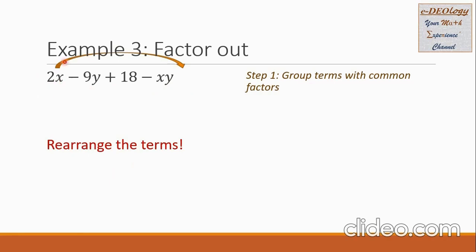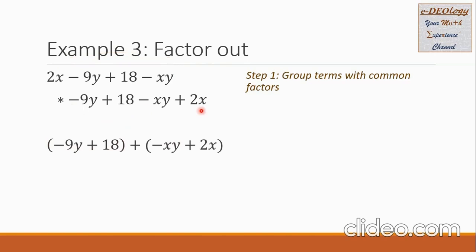I can put 2x on the last part, so it becomes negative 9y plus 18 minus xy plus 2x. From here, I can see that there is a common factor in the first two terms, and also in the last two terms. So it's now the quantity negative 9y plus 18, plus — and since the third term is negative xy, I should put the plus and the grouping symbol for negative xy plus 2x.